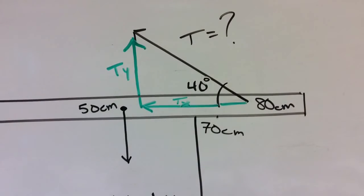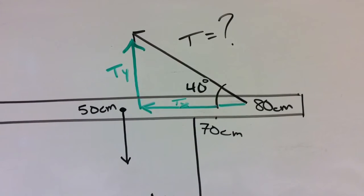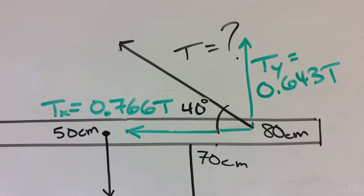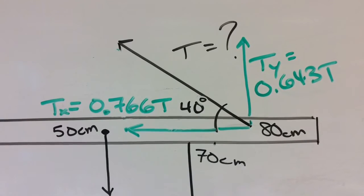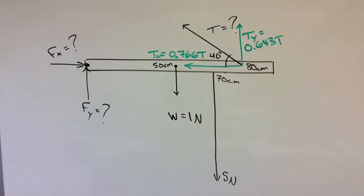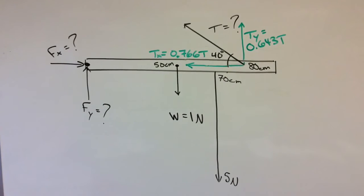You've added the tension, you've found the components, the Tx and the Ty. You've then moved them so that you remember that the tension Y and the tension X are still acting at that same point where the tension is applied. And you have a free body diagram.